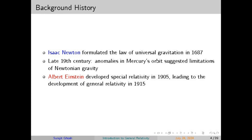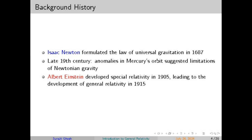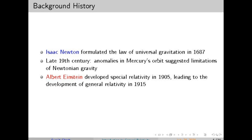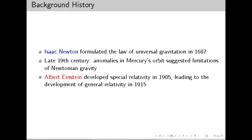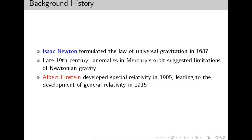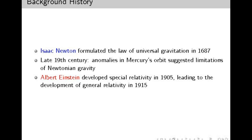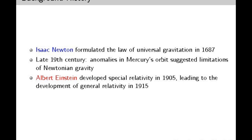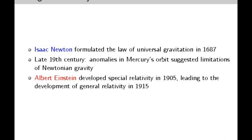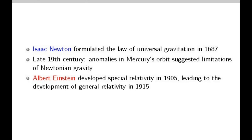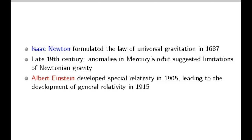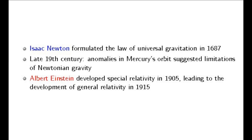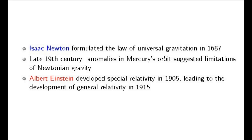One of the most compelling pieces of evidence for general relativity came from the Hulse-Taylor binary pulsar, a system consisting of two neutron stars orbiting each other whose orbits gradually shrink over time due to the emission of gravitational waves, as predicted by Einstein. This indirect evidence for gravitational waves earned Russell Hulse and Joseph Taylor the Nobel Prize in Physics. Then, in 2015, LIGO — the Laser Interferometer Gravitational Wave Observatory — made a groundbreaking discovery: for the first time, gravitational waves were directly detected, caused by the collision of two black holes, opening a new era of astronomy.